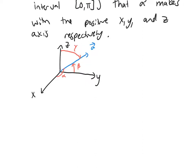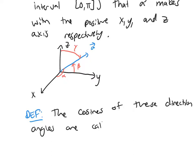And now we can also define direction cosines, and it's just the cosines of these angles. Direction cosines of these direction angles are called the direction cosines of the vector A.